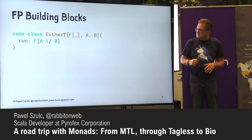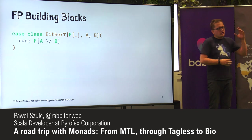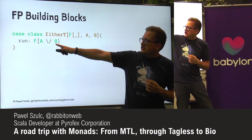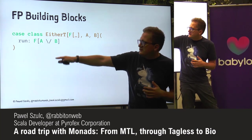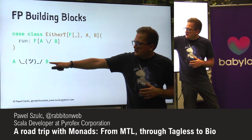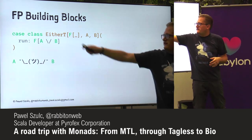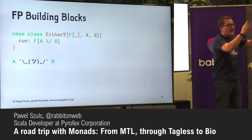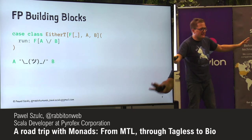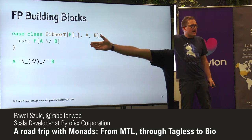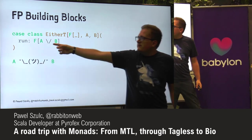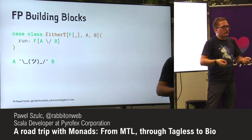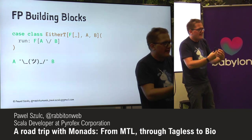When you start learning about FP, you learn about little things like EitherT — or in ScalaZ, the disjunction, which is just A or B. You see this and think it's either A or B, nothing else. But it's nothing really complicated — it's just a wrapper, a class that wraps a disjunction (either A or B) over some F, whether that F is an Option, IO, Task, or whatever. It's just a wrapper, nothing else.